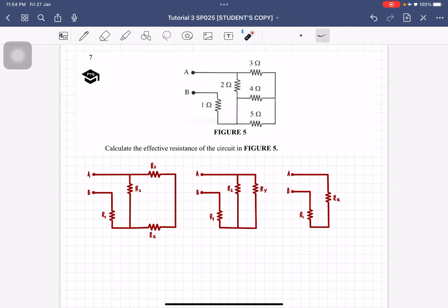Okay, question number 7. So we have to calculate the effective resistance of this circuit shown here. So basically, this is R1, this is R2, R3, R4, and R5.